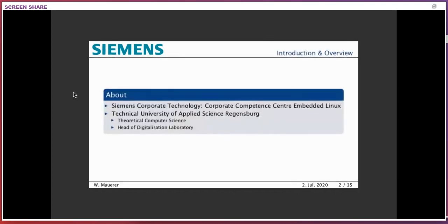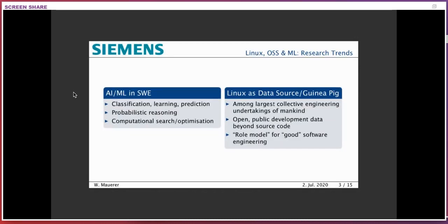Why do we want to use AI, and what are the main possibilities to apply artificial intelligence and machine learning in software engineering? If you look at the literature, it turns out there are three classes of problems where machine learning techniques can support our work as software engineers. The first category is classification, learning, and predicting — that's a naturally quite good match and the category that has been investigated longest in software engineering.